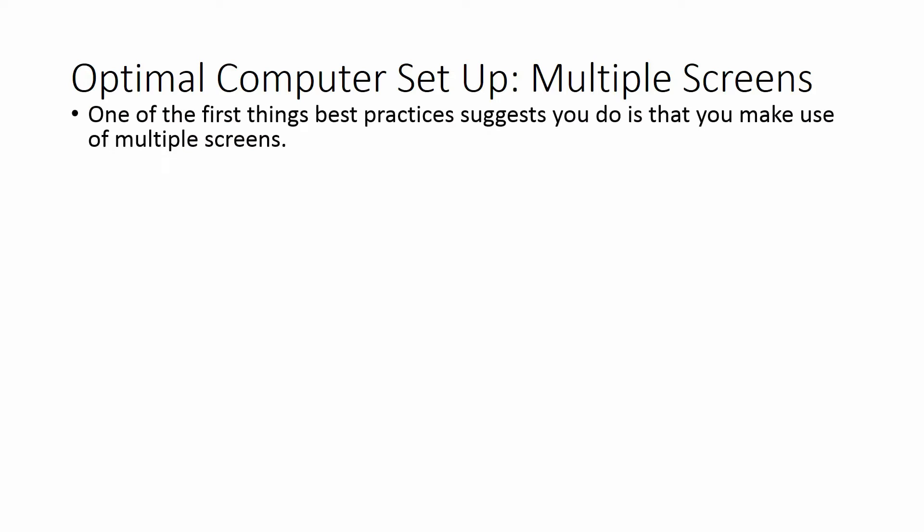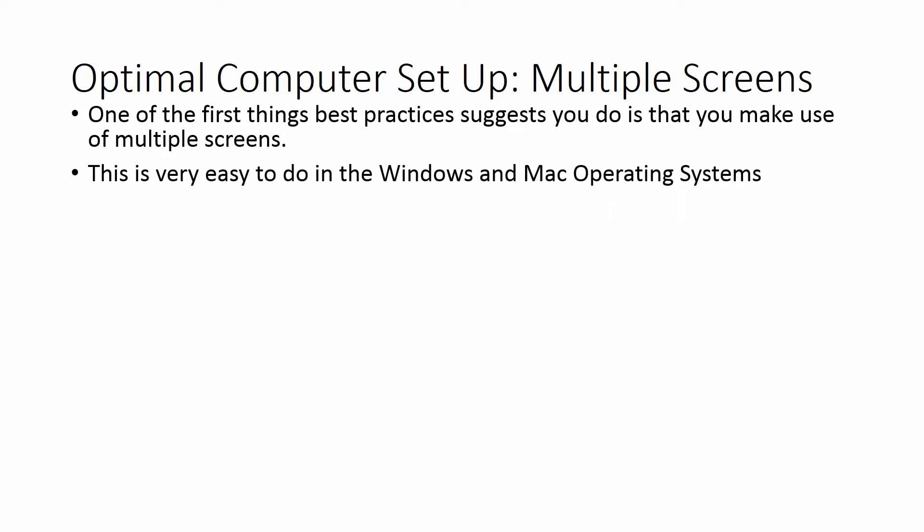One of the first best practices when you are using Camtasia 9 is to make use of multiple screens. That can be the screen on your laptop as well as a monitor, the screen on your desktop as well as another monitor, or it can be two monitors. You need to make use of multiple screens if you're going to be most effective in screencasting, and making those monitors work with your operating system is very easy to do in Windows and Mac.